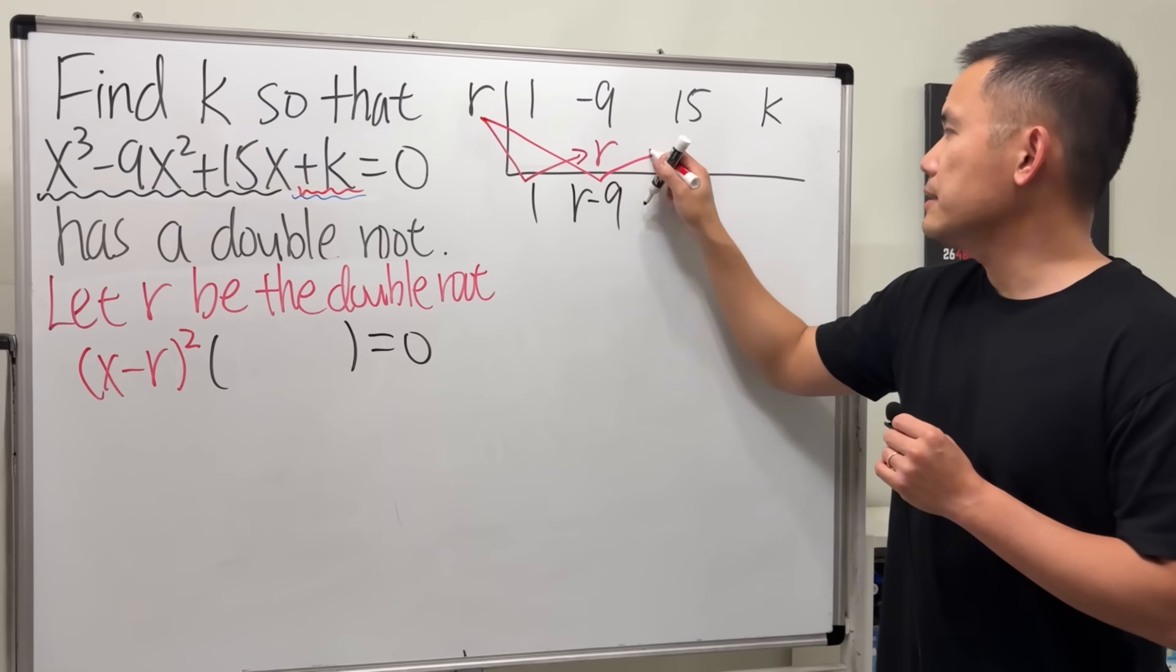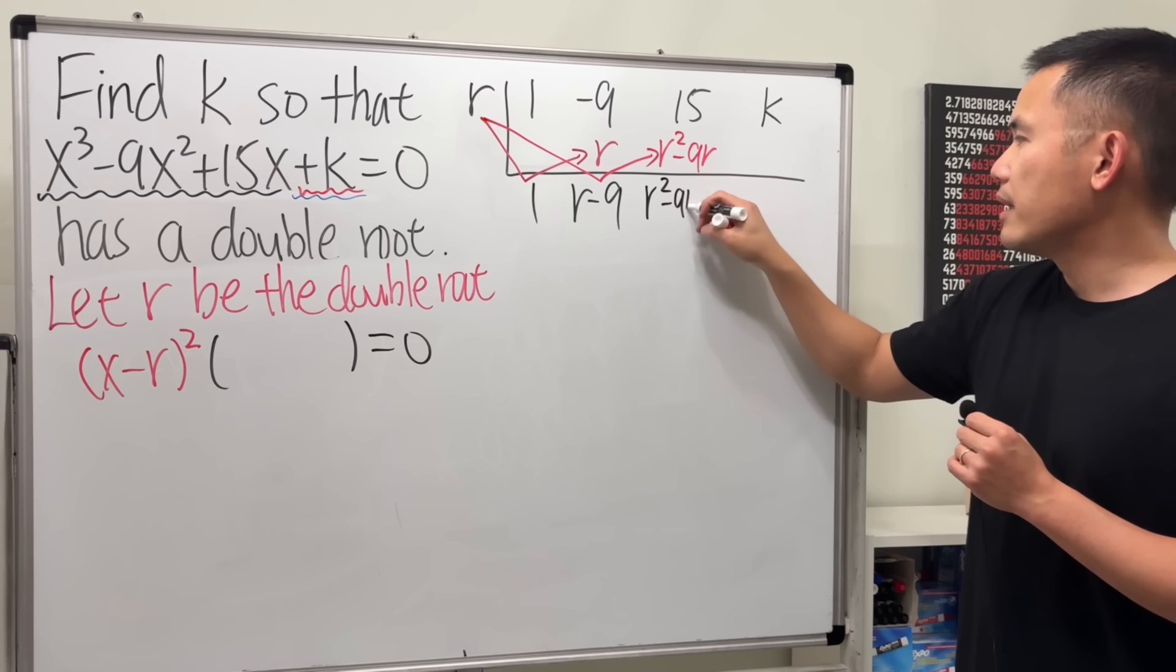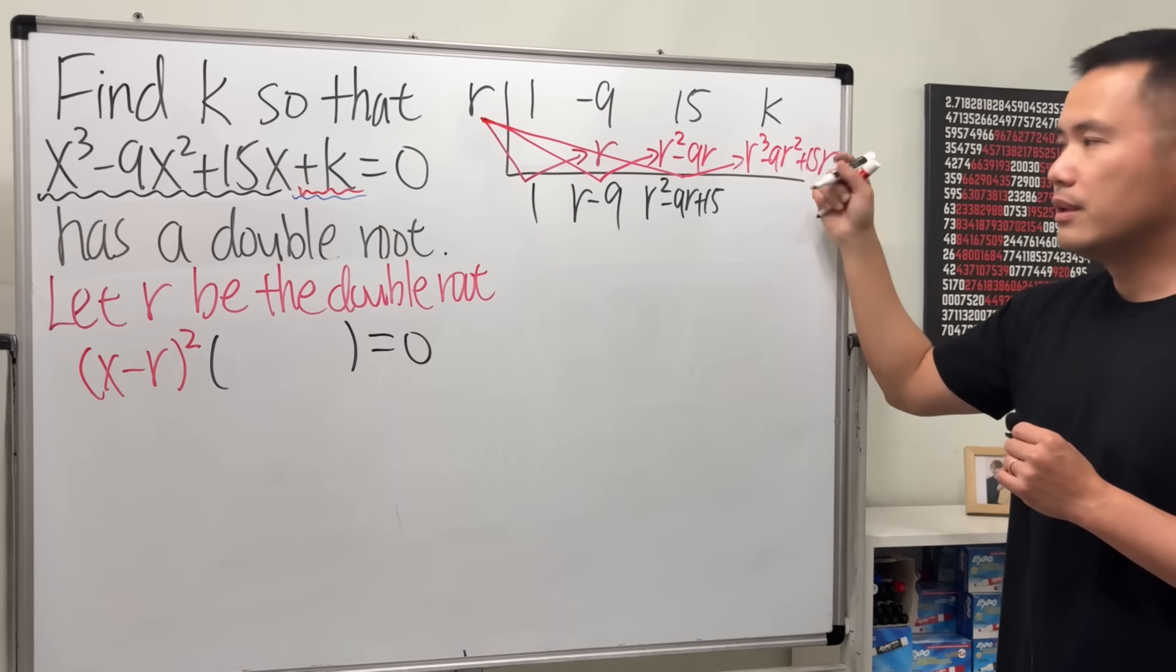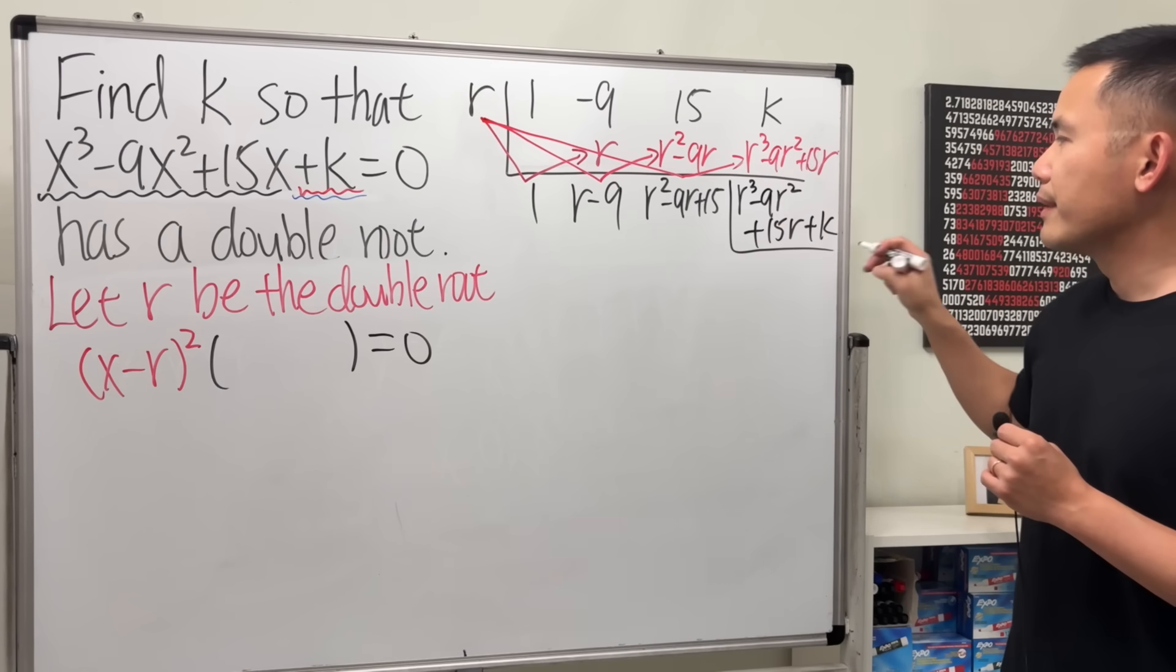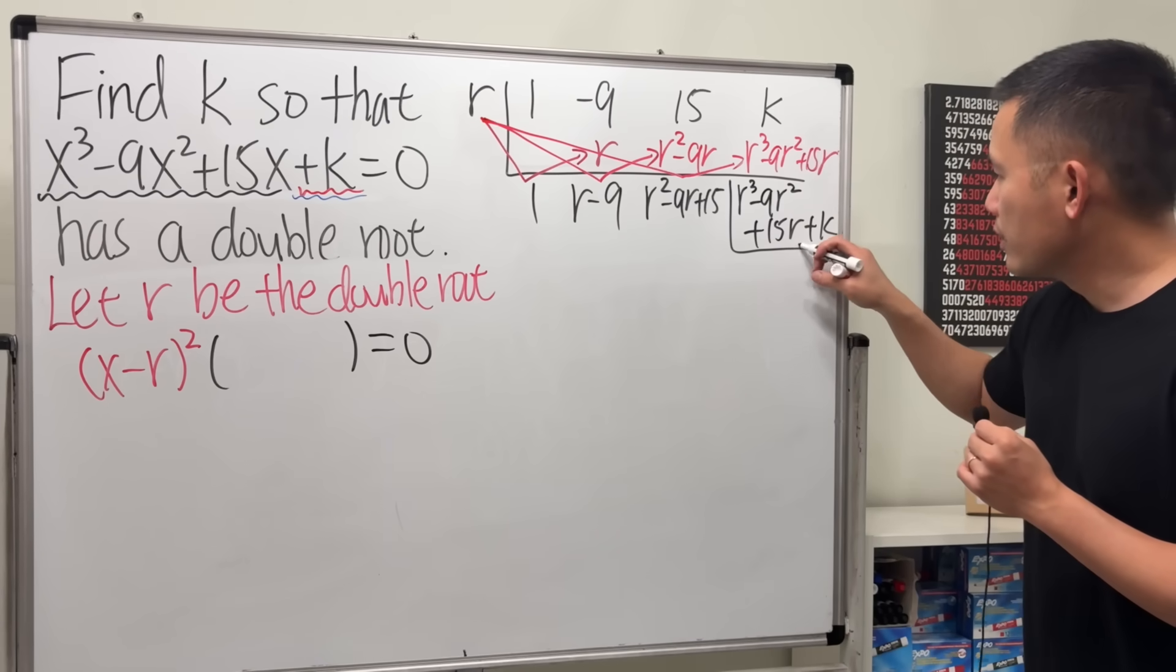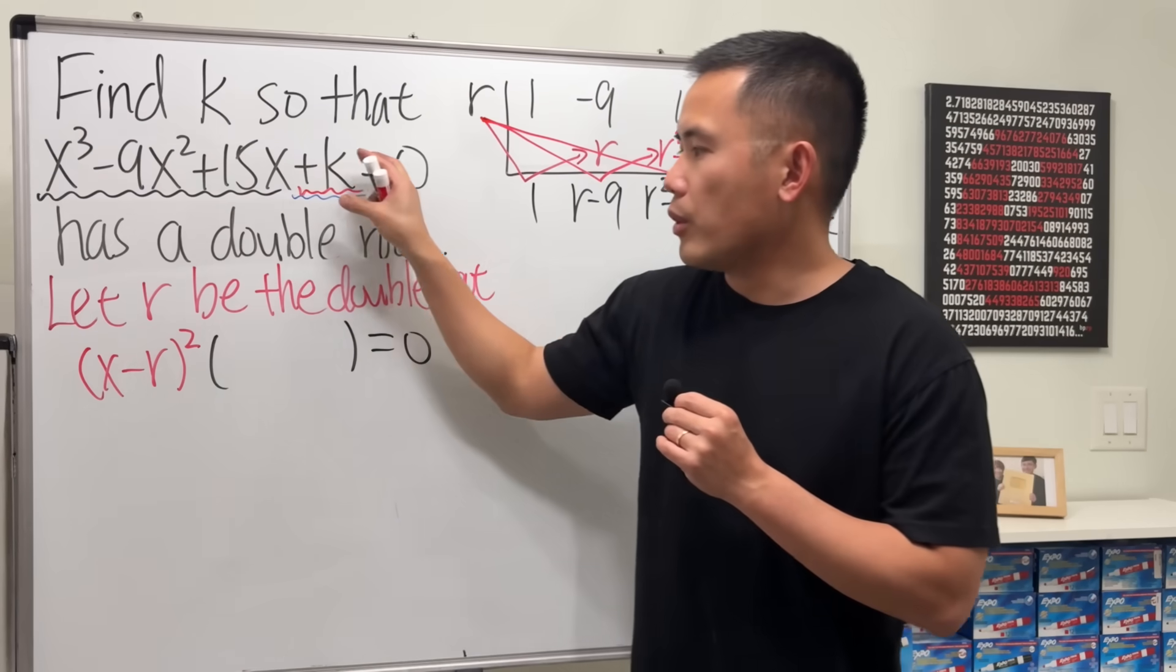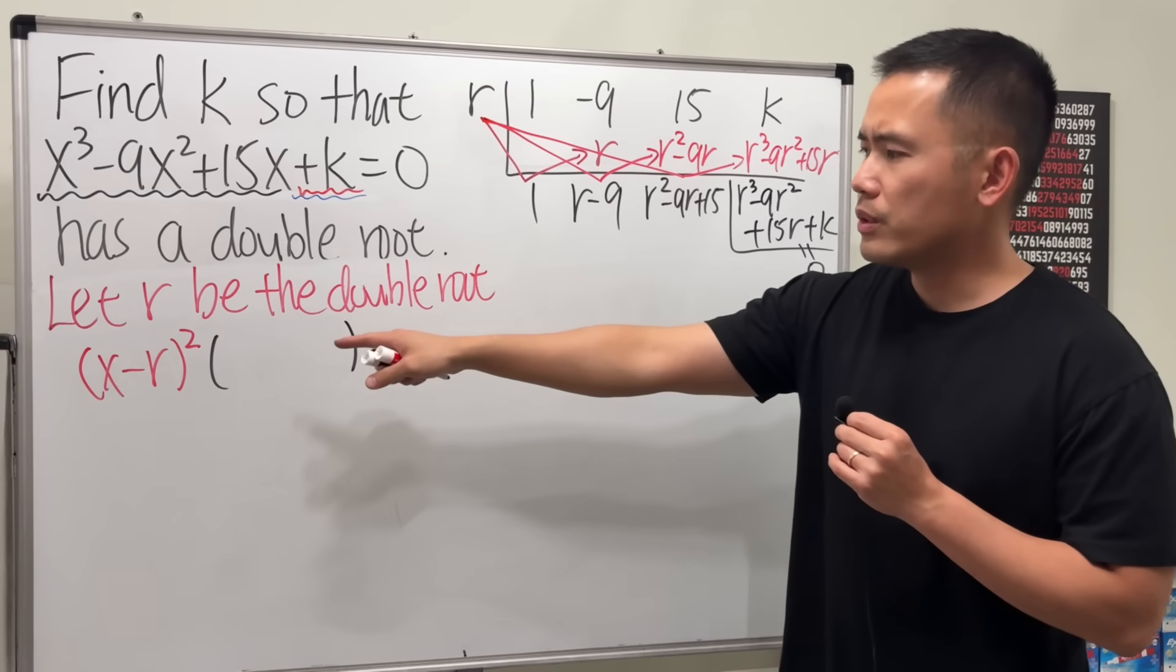We can just put in the r right here. Bring down the 1, and then do r times 1 and put it here. For synthetic division we add, so that's just r plus negative 9 like this. And then do the same thing—this times this we will have r² - 9r and then add it with that, so it's just r² - 9r + 15. And then do it again and we get r³ - 9r² + 15r plus k.